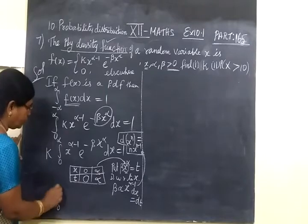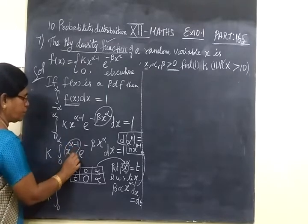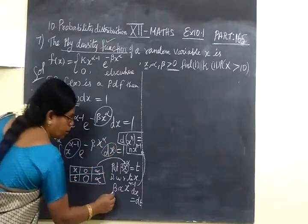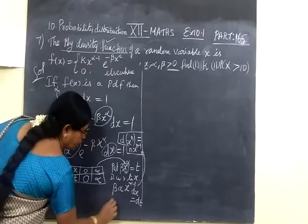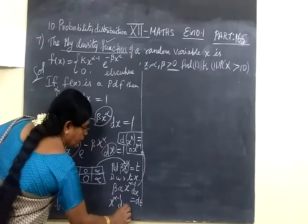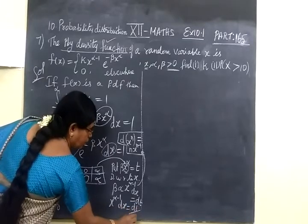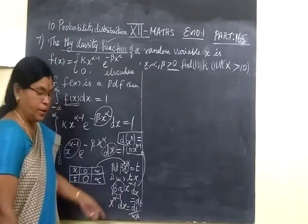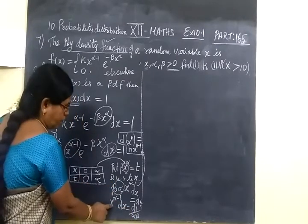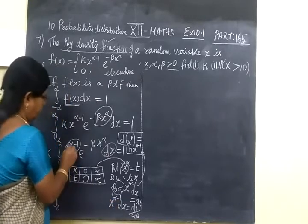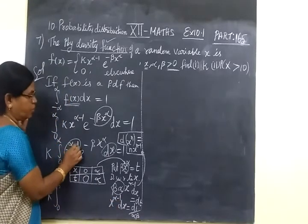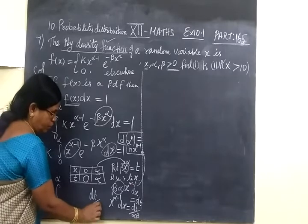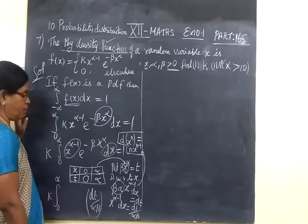So K times the integral from 0 to infinity: we consider x^(α-1) dx. Here x^(α-1) dx equals dT divided by αβ. Bring αβ to the denominator on the right-hand side, so x^(α-1) dx can be written as dT by αβ.